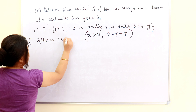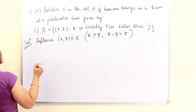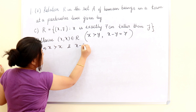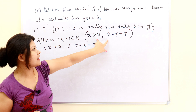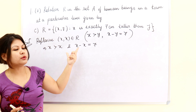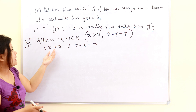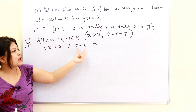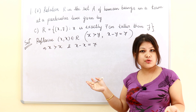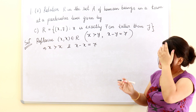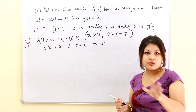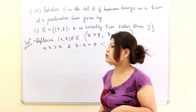The condition for reflexive is that (X,X) belongs to R. So the meaning becomes: X is greater than X, and X − X = 7. Here we simply replace Y with X. These two conditions contradict each other — how can X be greater than X? And how can X − X = 7? X − X can only equal 0, not 7. That's why this is not acceptable. We say (X,X) does not belong to R, so the relation is not reflexive.